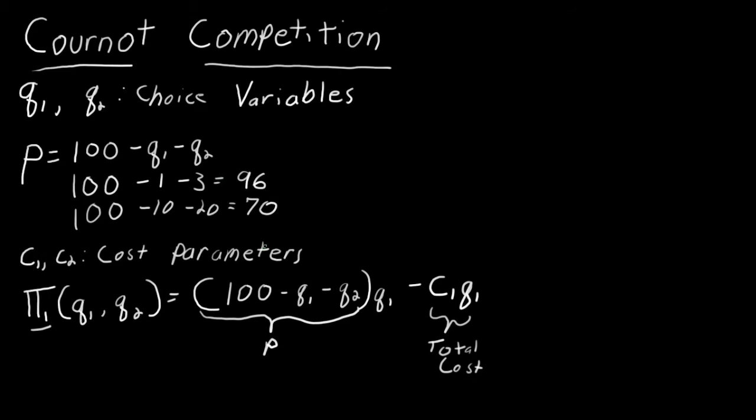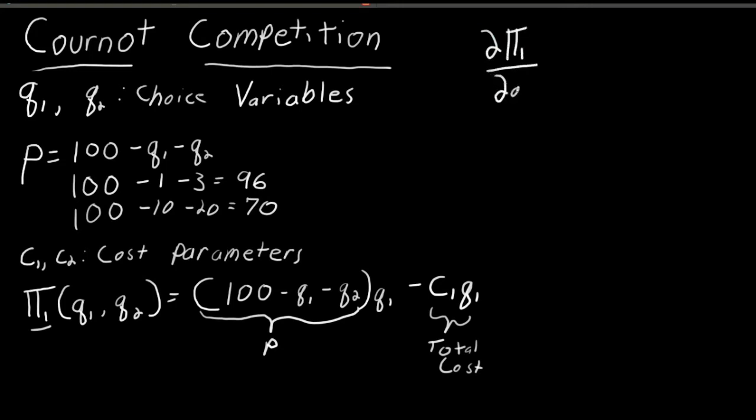So, recall from calculus, how do we find the maximum of a function? Well, to do this, we take the derivative and we set it equal to zero. So, we can say the derivative of firm one's profit with respect to the quantity Q1 is equal to... We can do the same thing if we were to write out player two's profit function and his conditions.